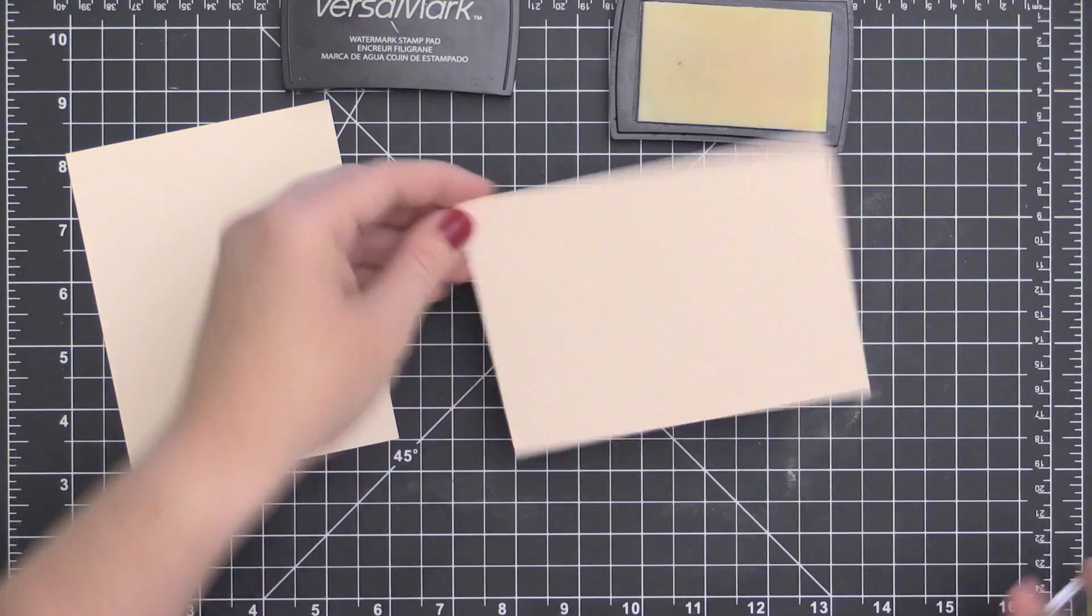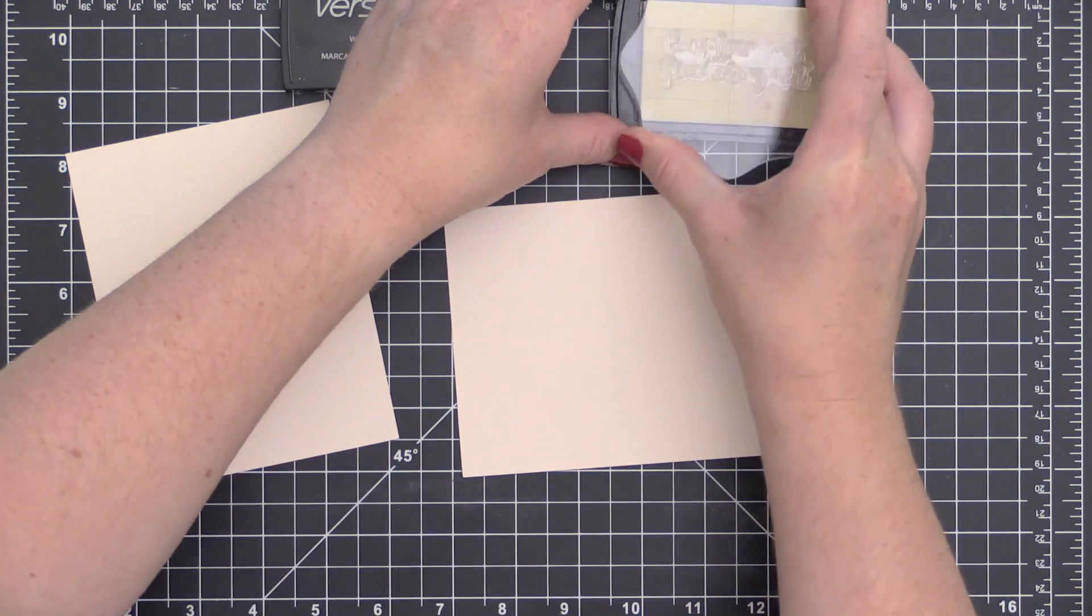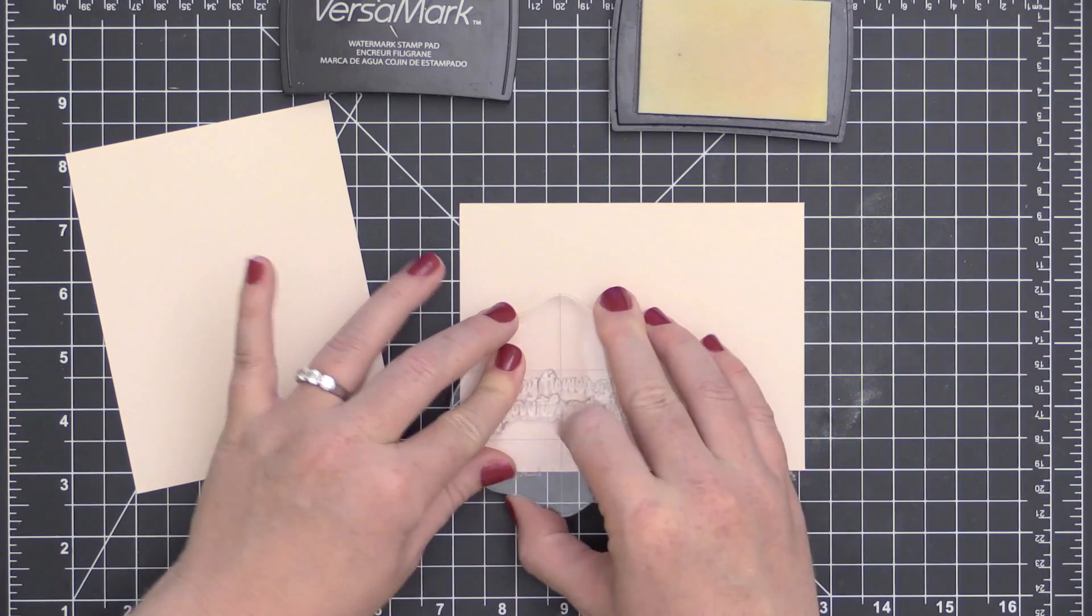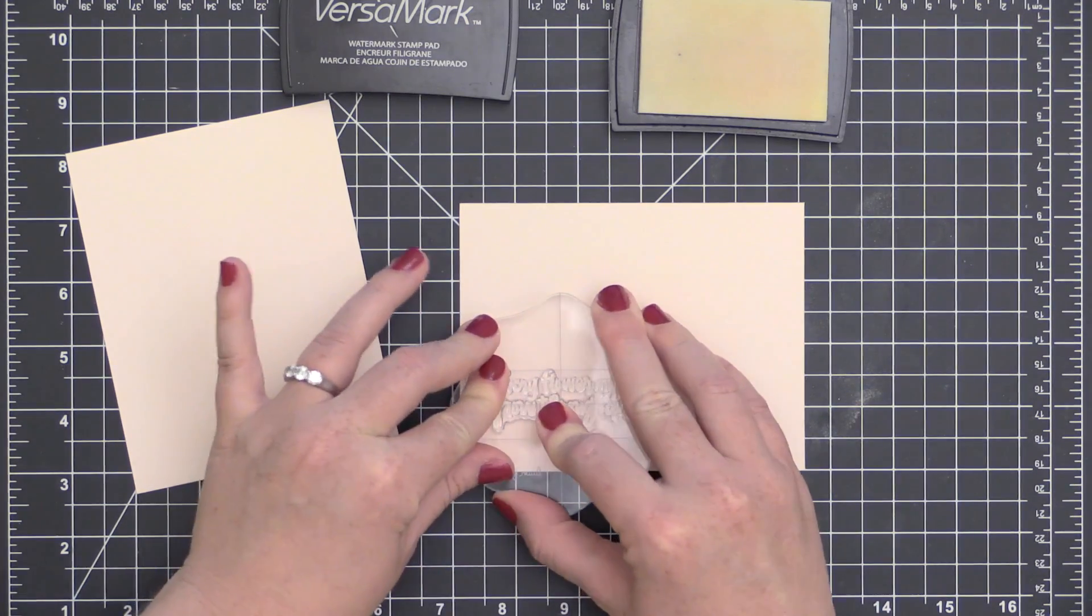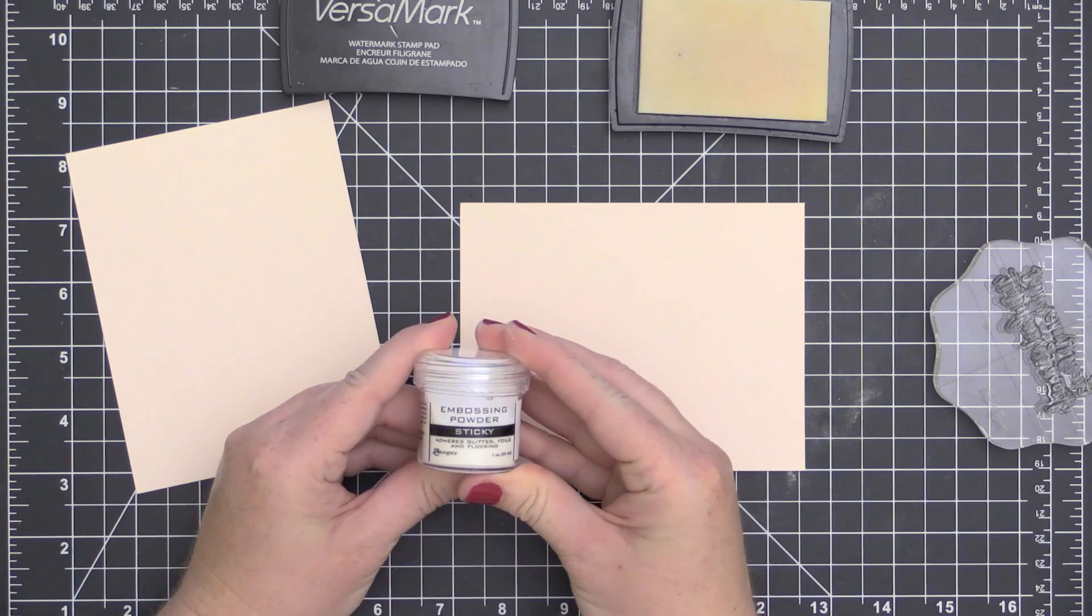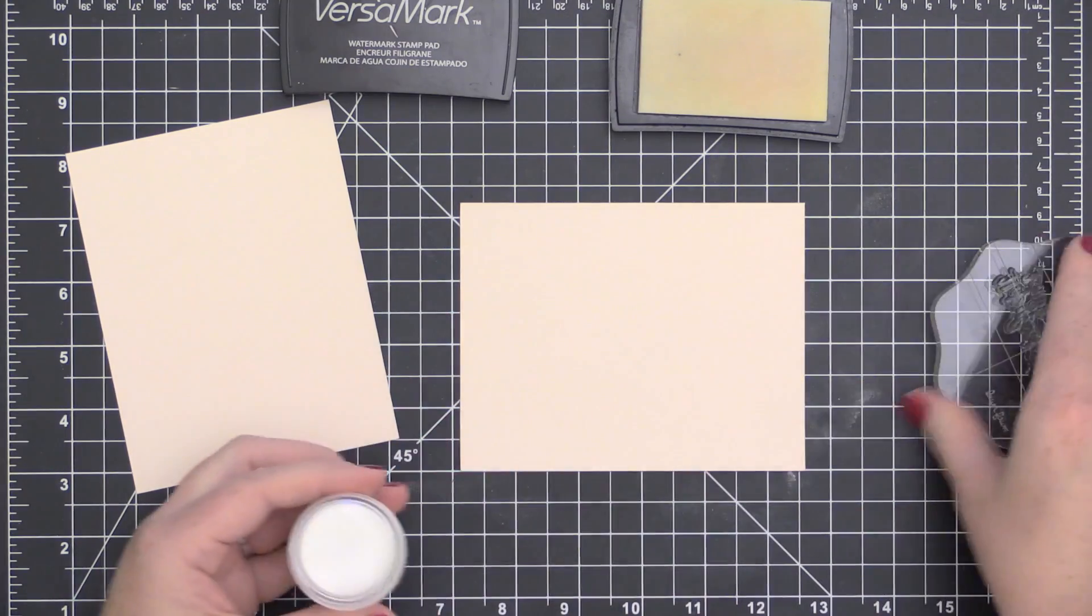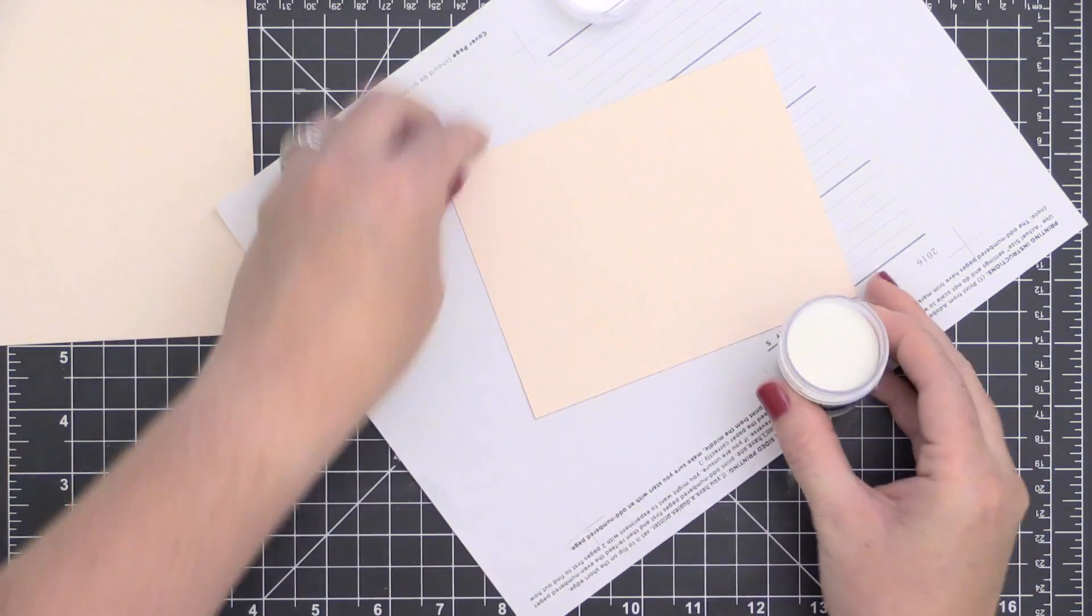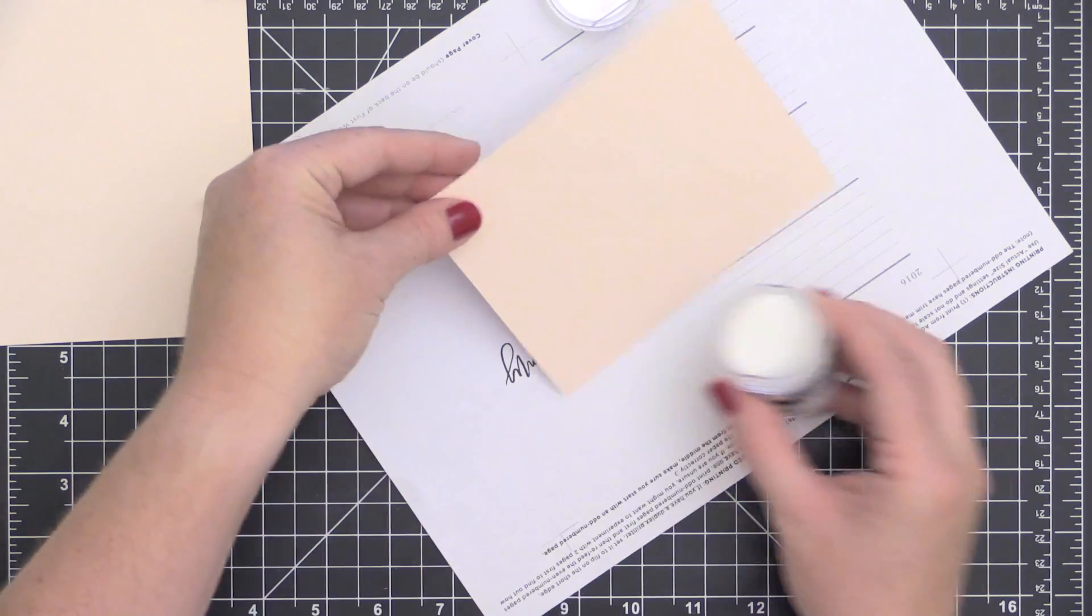One of the great things about gilding flakes is that you can use them with your stamps. I'm just prepping a couple pieces of pale rose cardstock, and then I'm stamping the sentiment from Plant Ladies Say onto the cardstock using some Versamark ink.